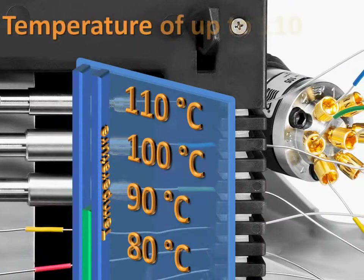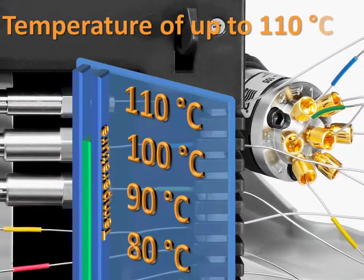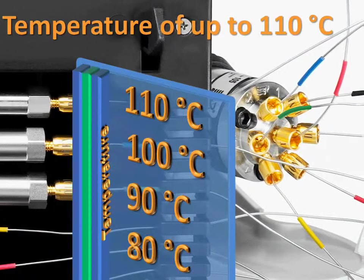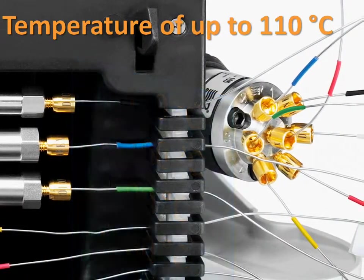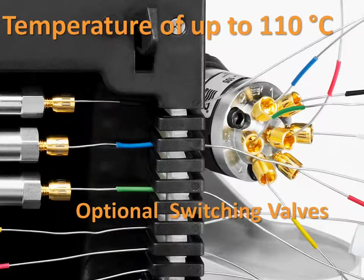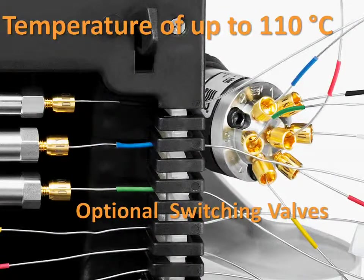The column thermostat provides accurate and precise temperature control up to 110 degrees Celsius, supporting a wide range of applications. It can hold up to 12 columns and features integrated switching valves that provide opportunities for advanced automated techniques.